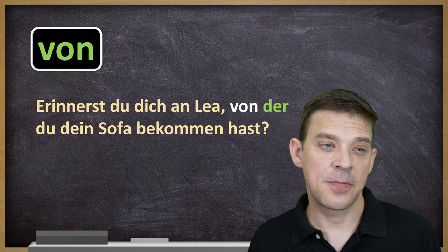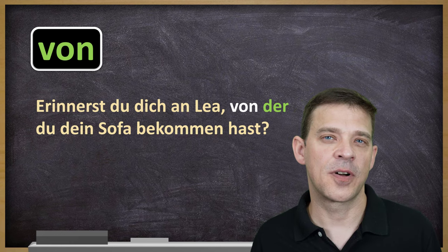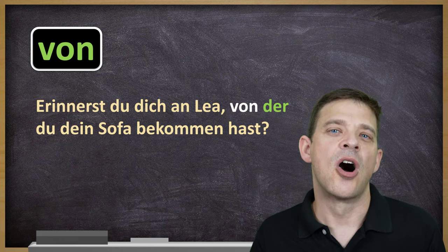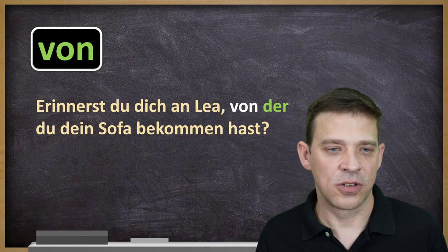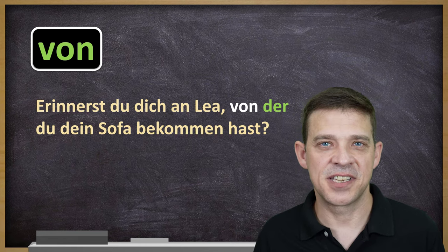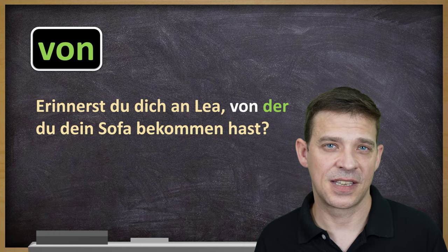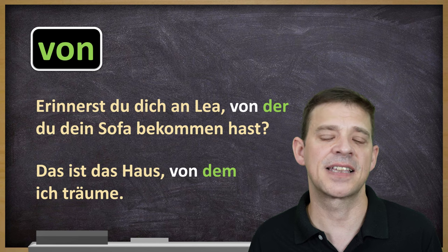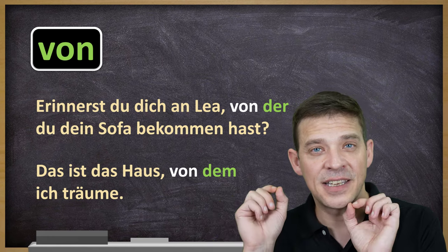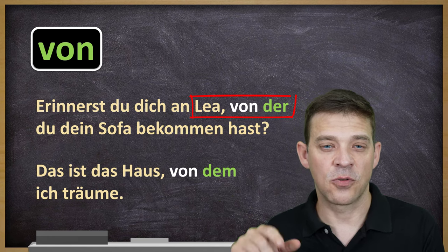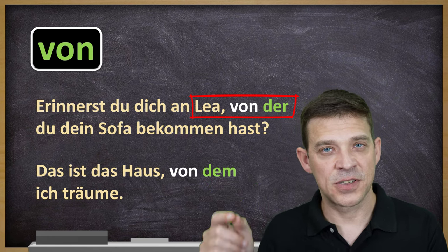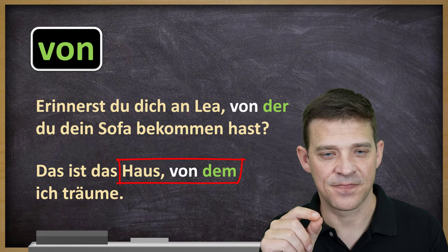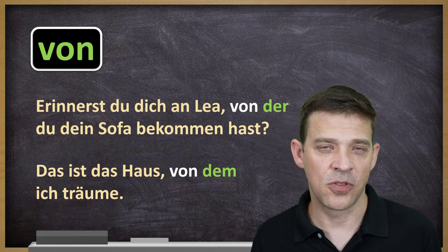Oder mit von — von ist auch eine Dativ-Präposition. Erinnerst du dich an Lea, von der du dein Sofa bekommen hast? Do you remember Lea, of whom you got your couch? Oder: Das ist das Haus, von dem ich träume. That's the house of which I'm dreaming. Here the relative pronoun still refers back to the noun mentioned before — von der, where der is feminine singular and refers to Lea. Von dem, where dem is neuter singular referring to das Haus, but it's in dative because of the preposition von.